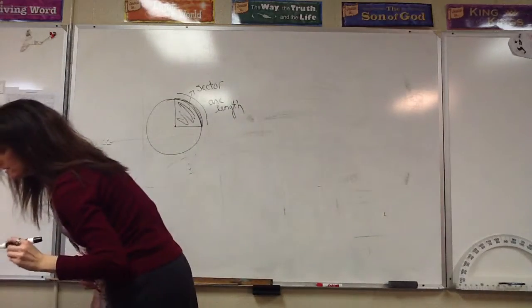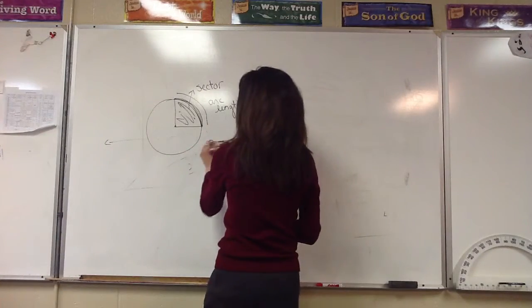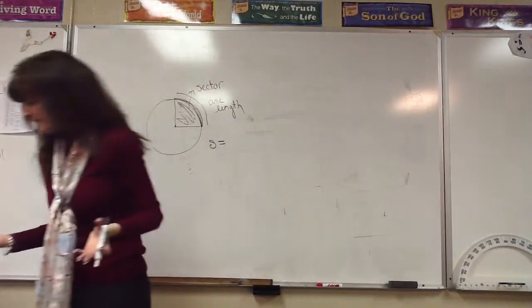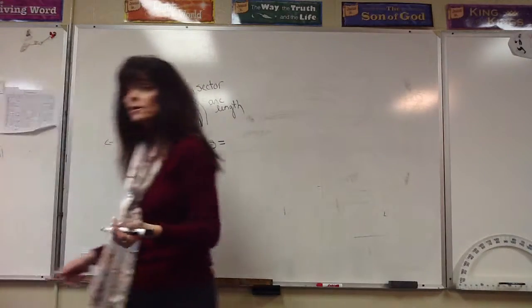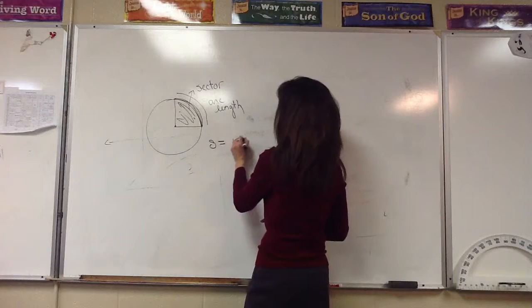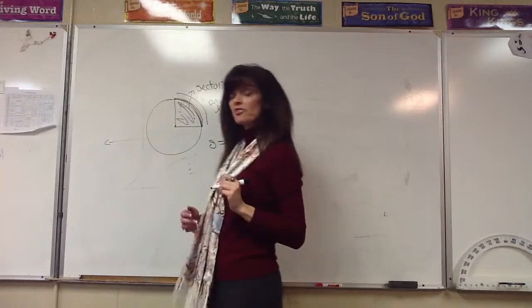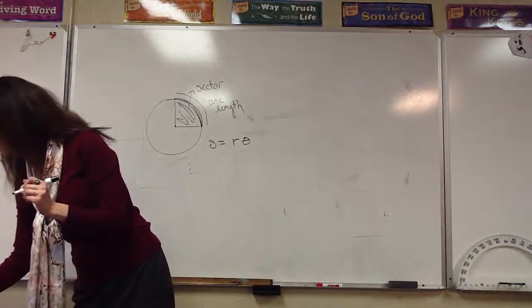The formula for finding the arc length is S. I know that doesn't really sound like it should represent an arc length. It's going to be equal to the radius times theta, and theta is your angle.